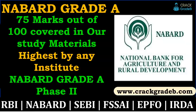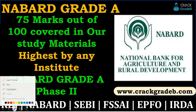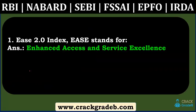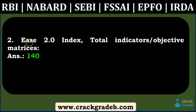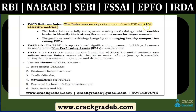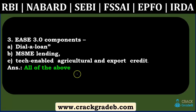The first question was the IS 2.0 Index, which was recently in the news. This question was asked from the Indian Bank Association release on the IS 2.0 Index. We have covered this in our report section — IS 2.0 Index, total indicators, objectives, and matrices. The exact number is not mentioned, but 120+ objective matrices are clearly mentioned. The third question was IS 3.0 components, where the answer was 'all of the above,' and we covered this in the report section.